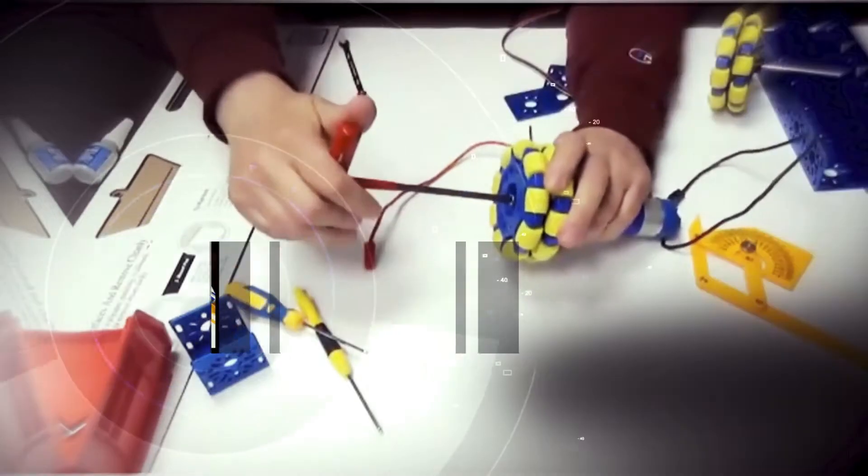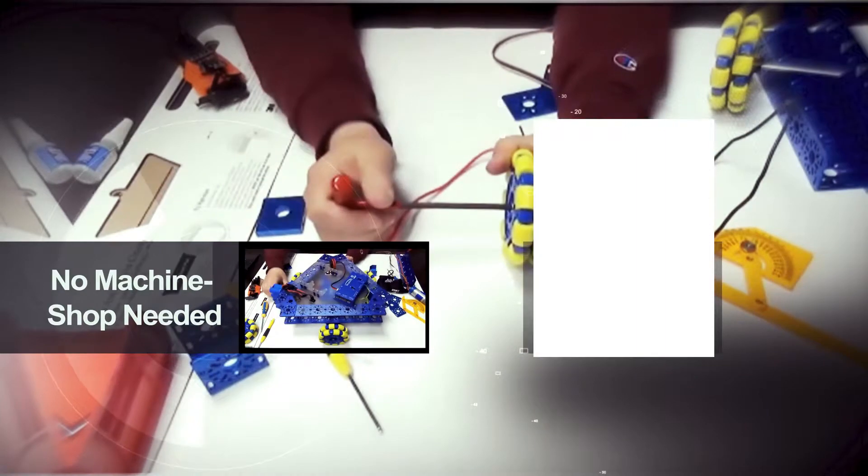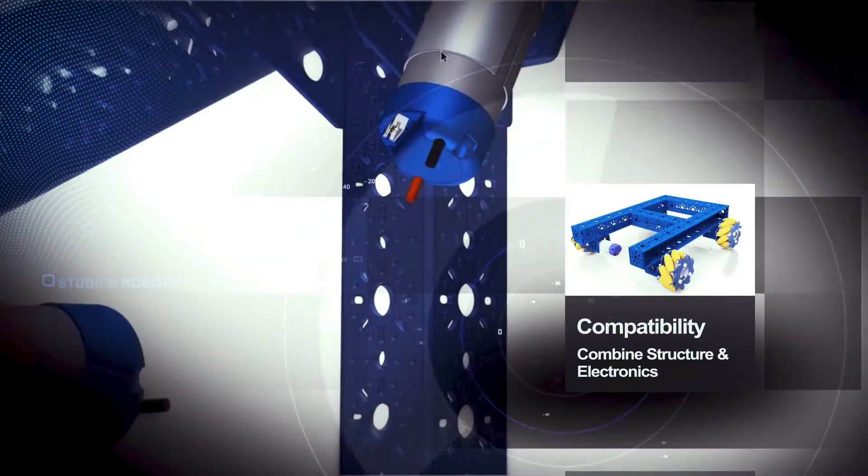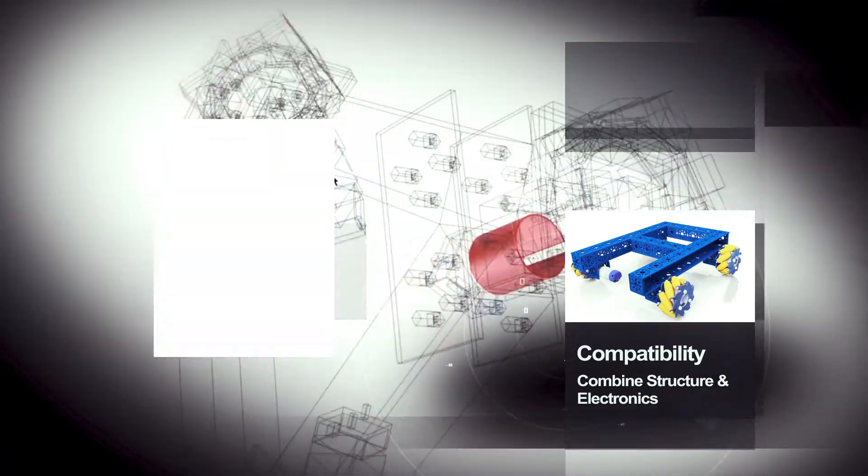All the components work easily together, no machine shop needed. Used in FRC and FTC, the unique hole pattern allows for compatibility with many existing build systems, allowing you to combine structure and electronics.